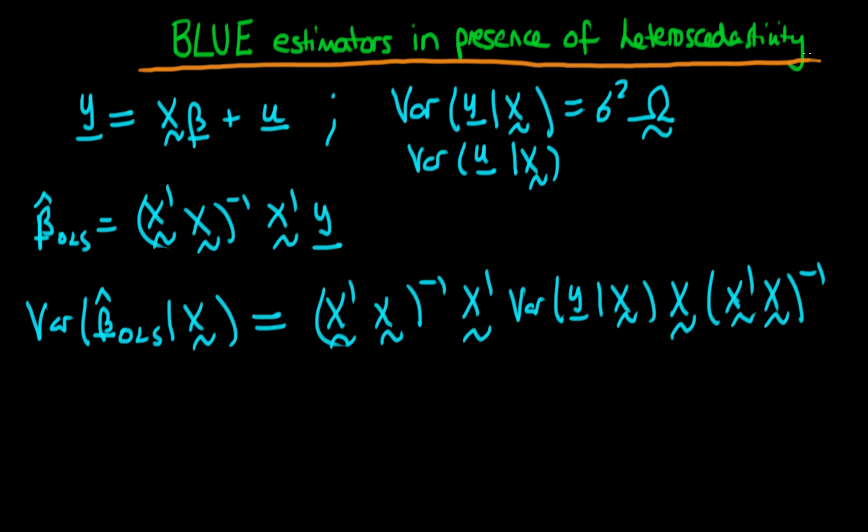And the reason it takes this form, even though I sort of mentioned it in the last video, is I want to actually just sort of rehash what I said before. This is because the variance of a constant matrix A times a random vector X is just equal to A times the variance of that random vector X times A prime.